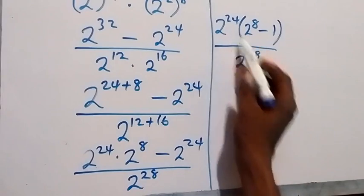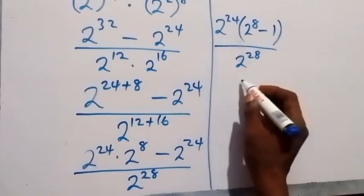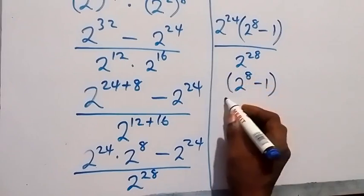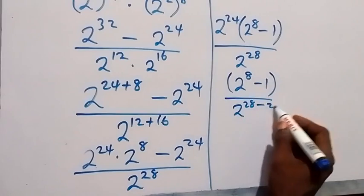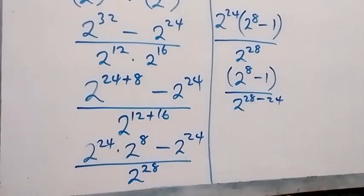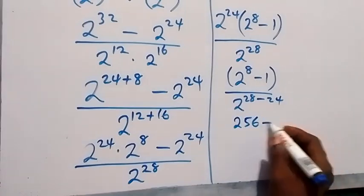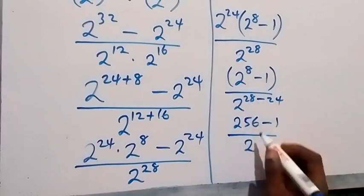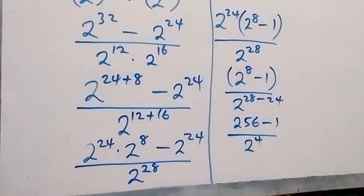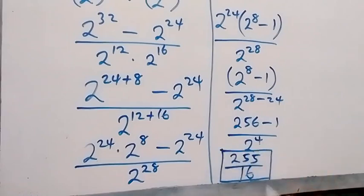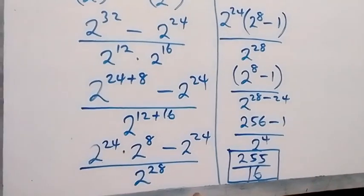Applying the law of indices, we write this as 2 raised to power 8 minus 1, divided by 2 raised to power 28 minus 24. Now 2 raised to power 8 is 256, so we have 256 minus 1 equals 255, divided by 2 raised to power 4 which is 16. That gives us 255 over 16.